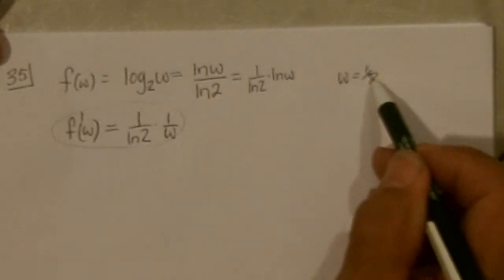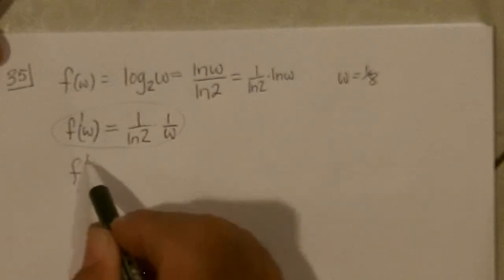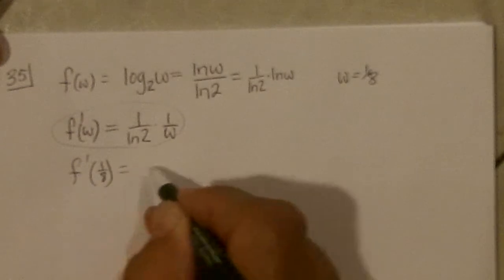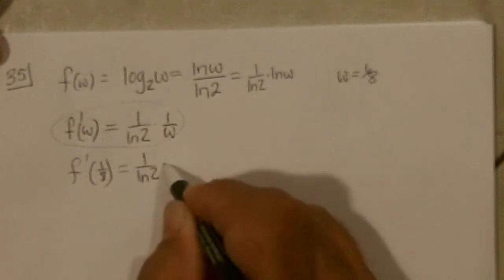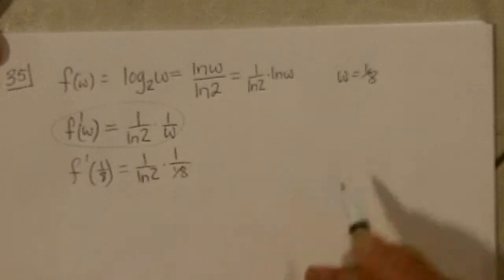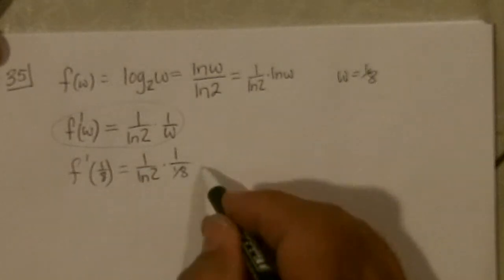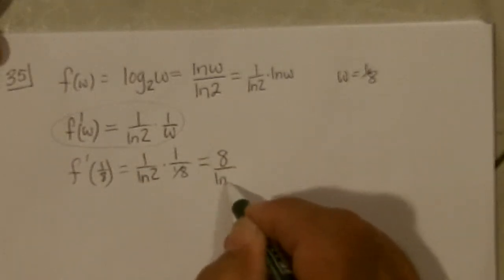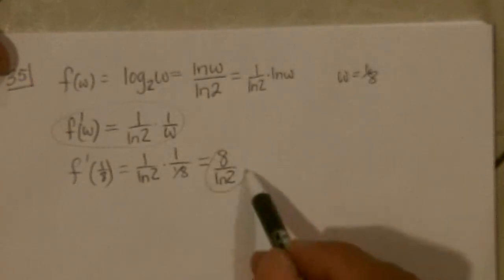We plug 1 eighth in. So if I define the slope at 1 eighth, and that's 1 over ln 2 times 1 over 1 eighth, which just becomes 8 over the ln 2. Okay. And there's our slope.